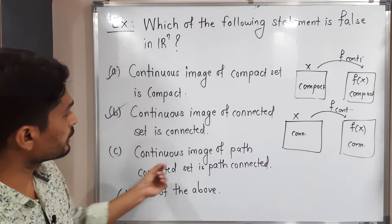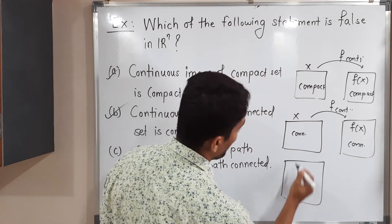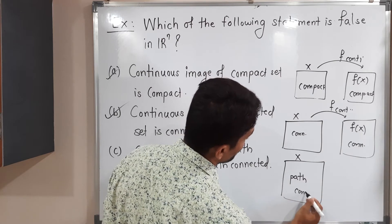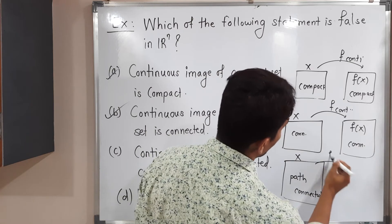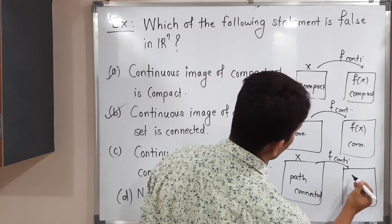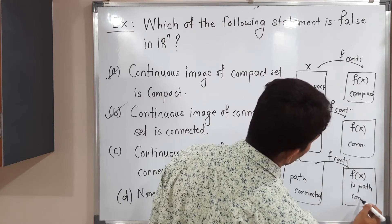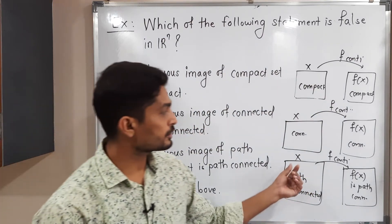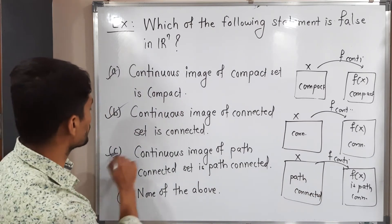Continuous image of path connected set is path connected. This time we have a metric space X which is path connected — you know the difference between connected and path connected sets. If function F is continuous, then F(X) is also path connected. So continuous image of a path connected set is path connected — this is also correct.